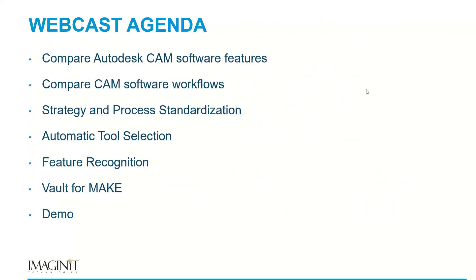Jumping into the agenda for today: I'm going to discuss the different CAM offerings that Autodesk has and compare them side by side. From there, I'll jump into what makes FeatureCam unique — strategy and process standardization, the automation that comes with tool selection and strategy selection. I'll show how feature recognition works, discuss Vault for Make for storing data and controlling revisions of NC programs, and do a live demo.